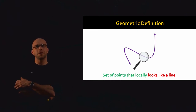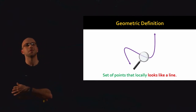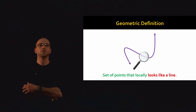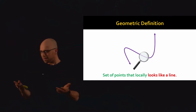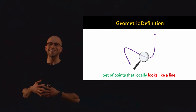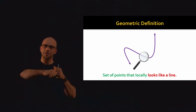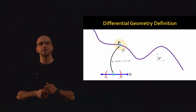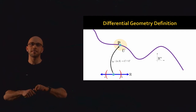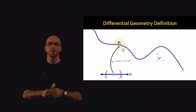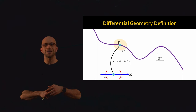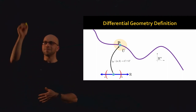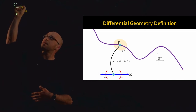Our geometric definition of a curve is going to look something like this: a curve is a set of points that locally looks like a line. We need to define what it means to locally look like something, and what it means to look like a line. When we put those pieces together, we'll get a formal definition. We're going to talk about defining a two-dimensional curve — the definition for a curve embedded in n dimensions is no harder, we just replace 2 with n.